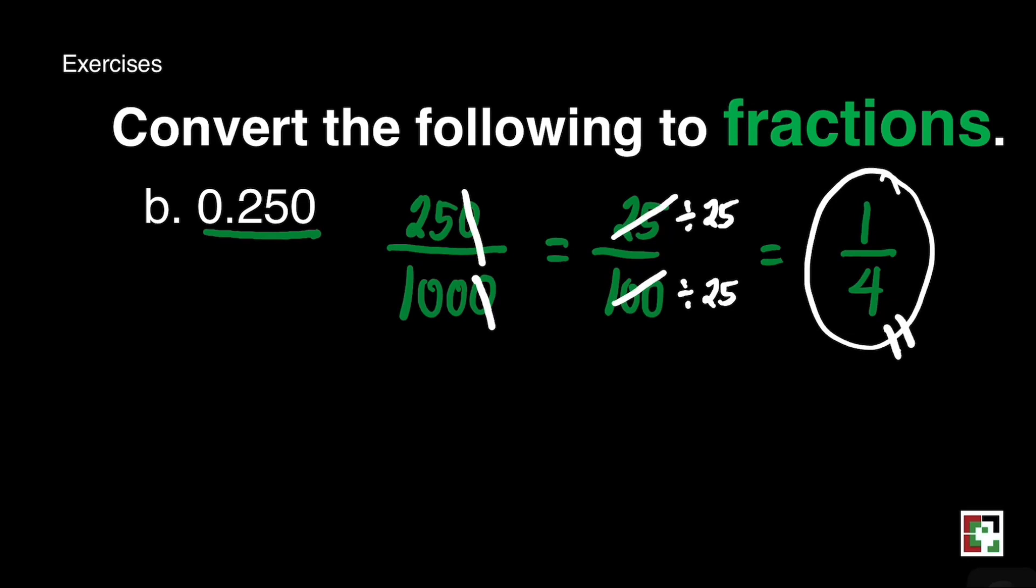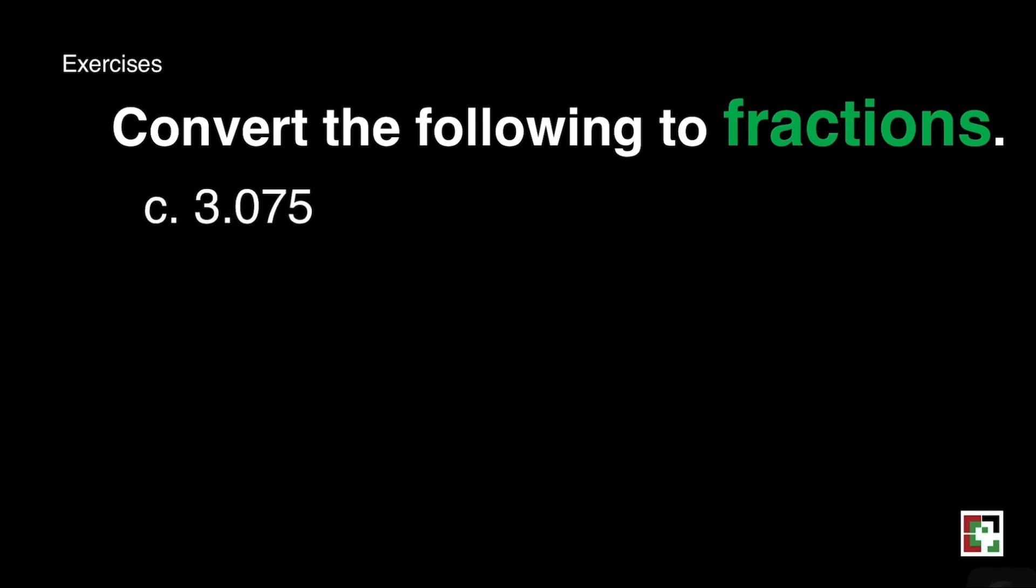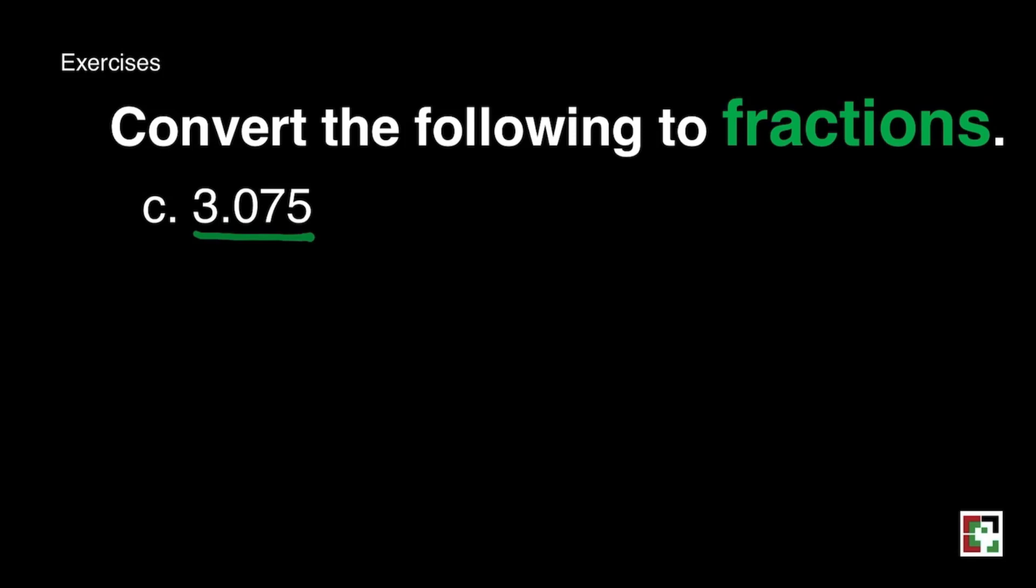Another one. That's 3 and 75 thousandths. Just simply read 3 and 75 thousandths and you're good to go. Then you are going to write 3 and 75 over 1,000. See? It's easy. Then do lowest term. What number can we divide both numbers? That's 25.